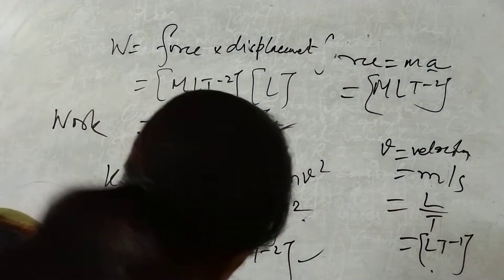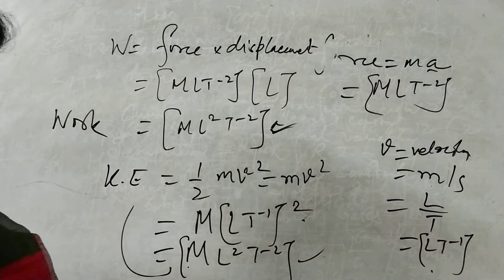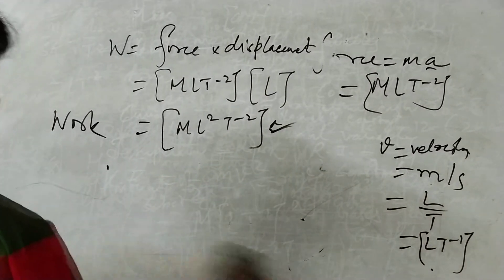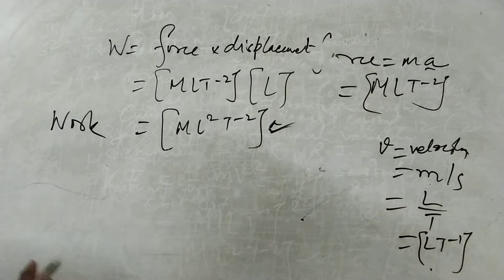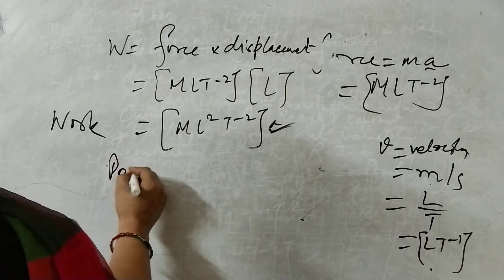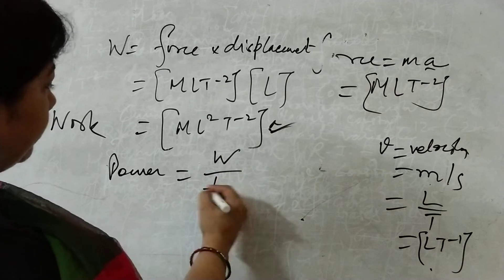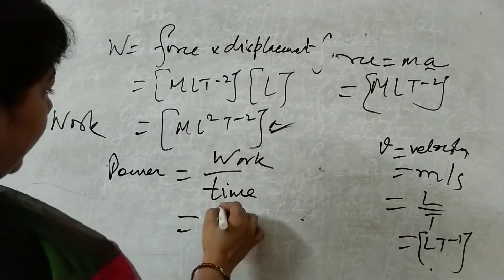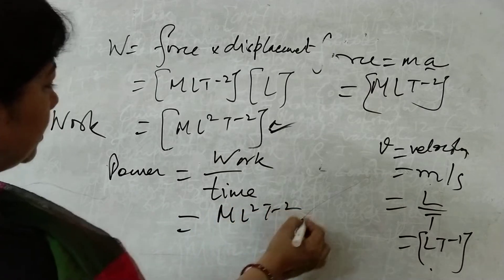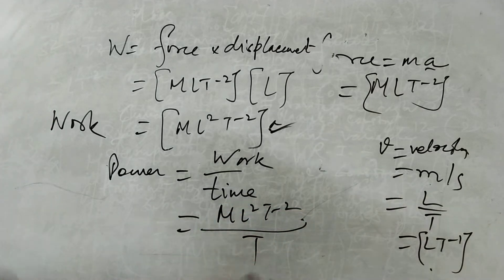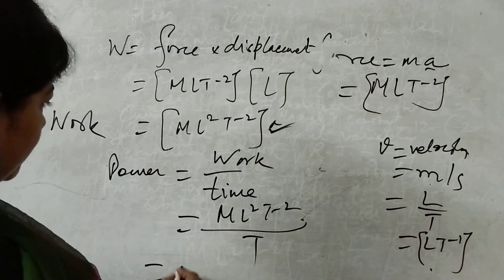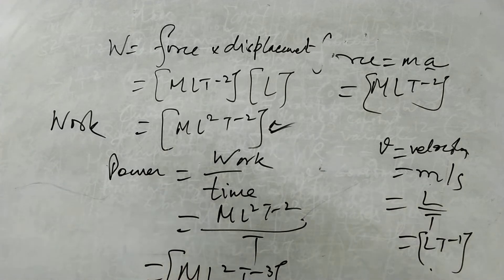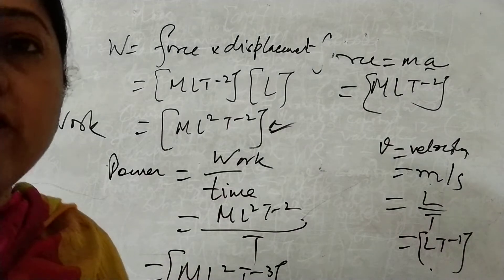For power, power is work done divided by time. Work has the formula ML²T⁻², divided by T. The T goes up, so minus 2 minus 1 gives ML²T⁻³. This is the dimensional formula for power.